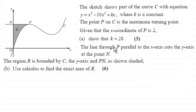So moving on from there, we're now told that the line through P parallel to the x-axis cuts the y-axis at the point N. And the region R is bounded by the curve C, the y-axis, and PN. And now what we've got to do is use calculus to find the exact area of that region R for 6 marks. So if you'd like to have a go at this, haven't done so already, just give you a moment then to pause the video.